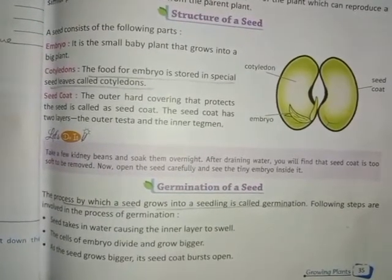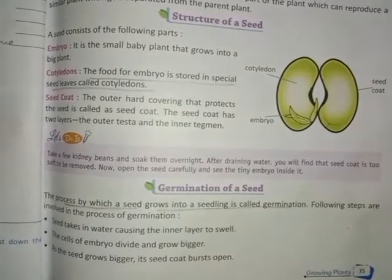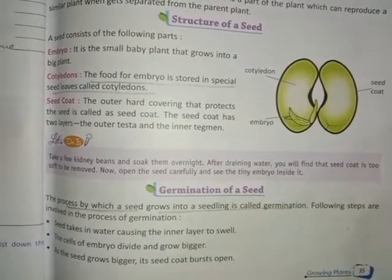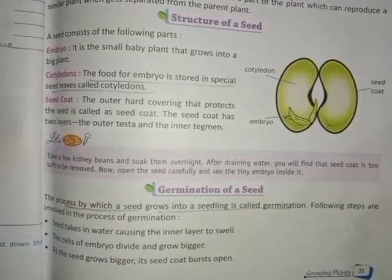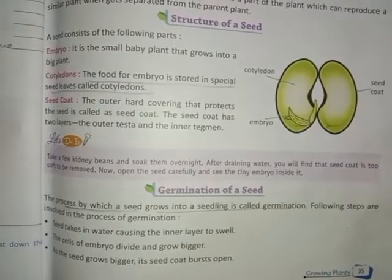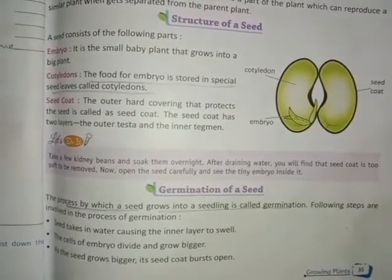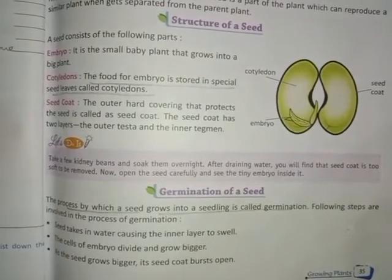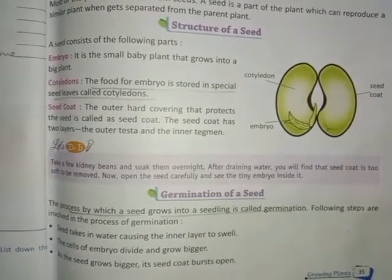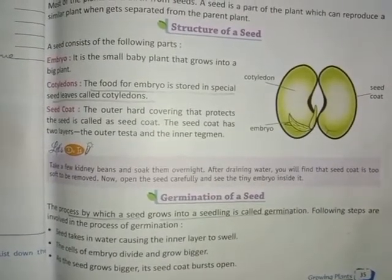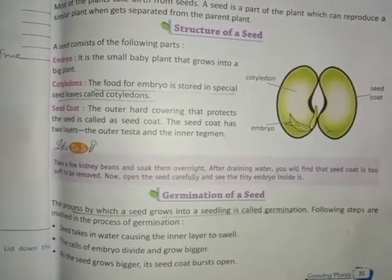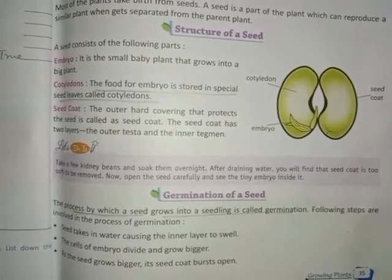In the process of germination, the following steps are involved. The seed takes in water, causing the inner layer to swell. The cells of the embryo's small baby plant divide and grow bigger. As the seed grows bigger, its seed coat bursts open. A tiny root called radicle grows downwards and a tiny stem called plumule grows upward towards the sunlight. The plumule grows into a shoot that produces leaves. The baby plant grows into an adult plant.